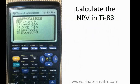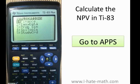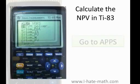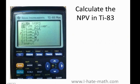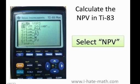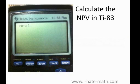The first step is to turn your calculator on. Now you're going to go to Apps — this blue button right here — and you're going to get a menu. On the menu, click on Finance. The Enter key is the one on the right button, and you will get this menu. Now remember, we want to calculate the net present value, so you go to NPV, which has a little parenthesis.